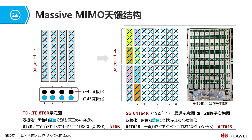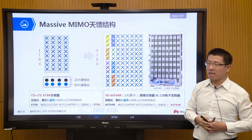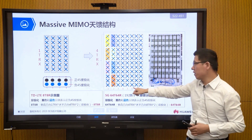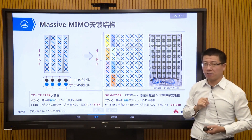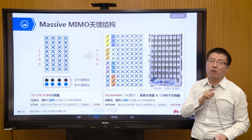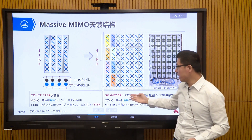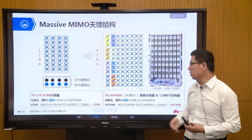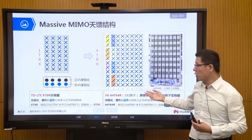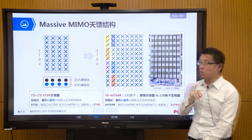In the 5G era, typically there are 192 arrays. But these 192 arrays have 1-drive-2, 1-drive-3, or 1-drive-4 scenarios, so actually there are 64 channels for receive and transmit antennas. This is our 64T64R, which brings far more antennas than the traditional 2T2R, 4T4R, or 8T8R. So we call it massive MIMO.